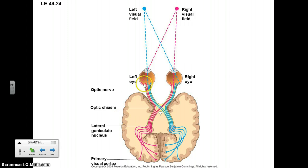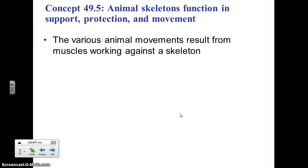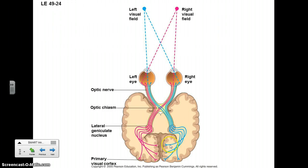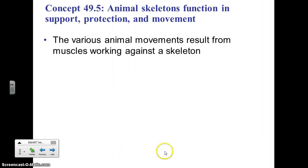The signal gets translated into a nerve impulse traveling through the brain, where you process that information and associate what you're seeing with certain things. There is a crossing of some signals from one eye to the opposite hemisphere, and visual processing primarily occurs on the back side of the brain.